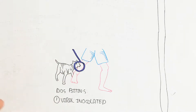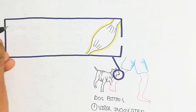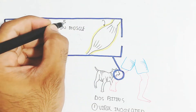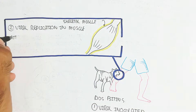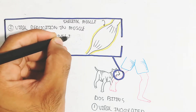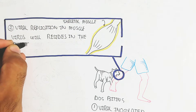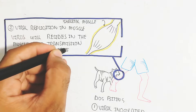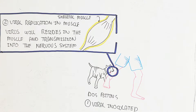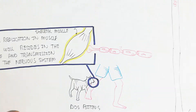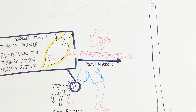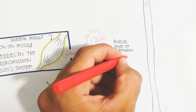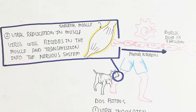Step two is viral replication in muscle. The virus will reside in the muscle and then transmit into the nervous system. This is the skeletal muscle. Here is a motor neuron which is important for the control of muscle contraction and voluntary movement. The dorsal root ganglion is used for voluntary muscle contraction control.